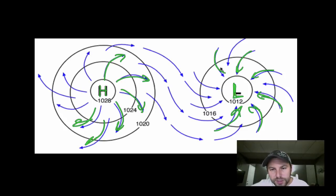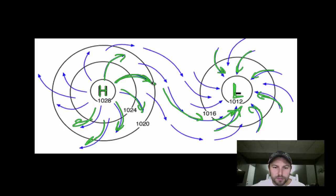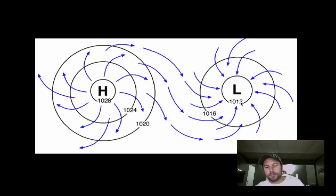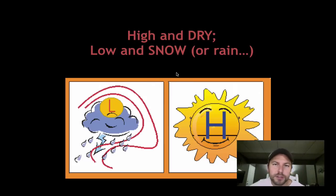If we draw these two systems next to each other, you can see how the high-pressure air moving outwards goes in towards, or converges at, our low pressure. So these are the two systems from overhead, next to each other, showing how the air moves from high pressure towards low pressure. Another little thing to remember: high and dry, low and snow — just remember the weather associated with each system.